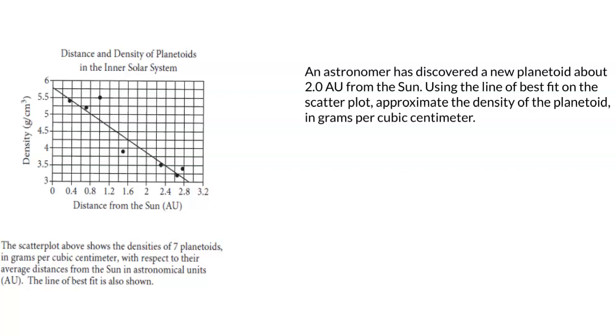The line of best fit is also shown on the graph, and it has a negative correlation, which means as one of the variables increases, the other one decreases.